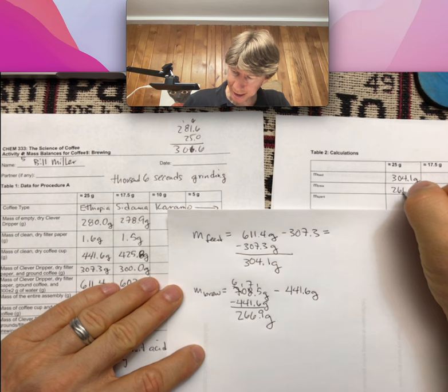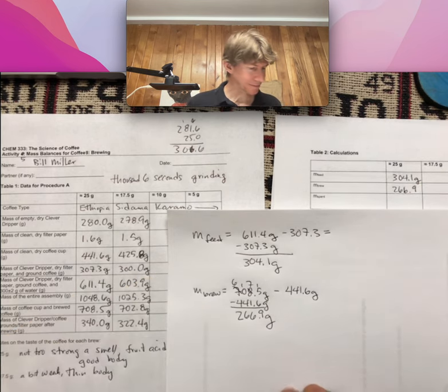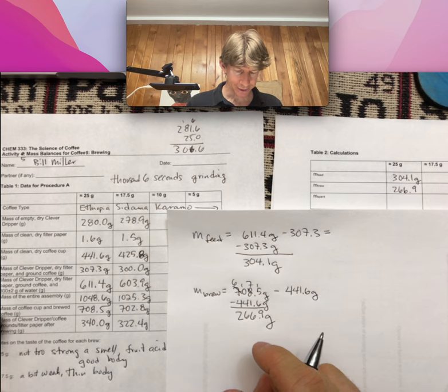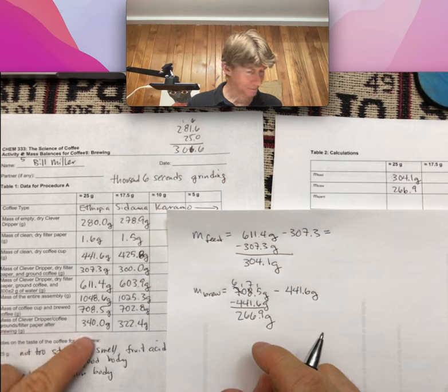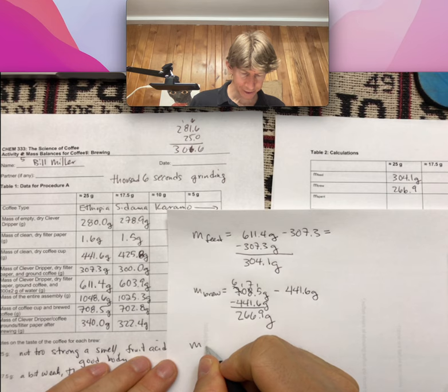So this is going to be mass of brew, 266.9. And then mass of spent coffee is going to be mass of clever dripper, coffee grounds, filter paper after brewing, clever dripper after brewing, minus clever dripper.